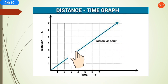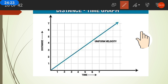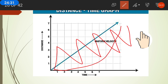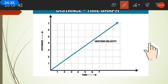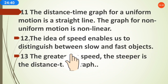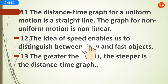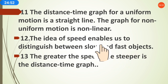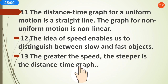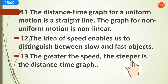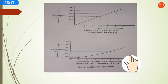This is the uniform motion graph — a straight line. In the case of non-uniform motion the graph could be like this, or like this — of any type. The idea of speed enables us to distinguish between slow and fast objects. The greater the speed, the steeper the distance-time graph — meaning more changes will be seen in the graph.